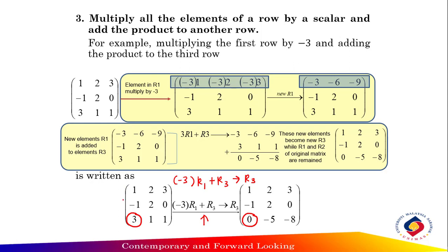This is the formula to change three to zero. So negative three multiplied by the first element of row one, which is one, plus the first element of row three gives zero. That is why the result here is zero.